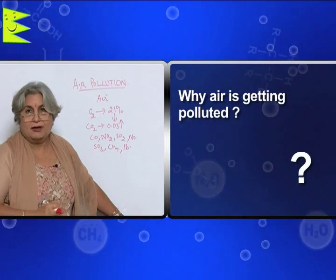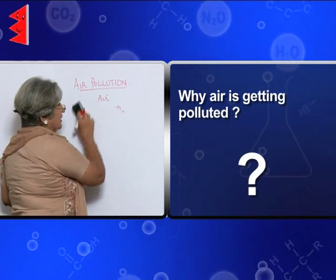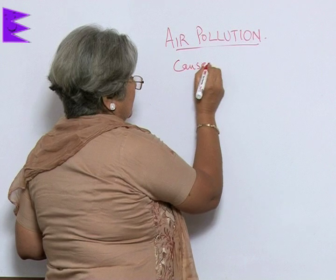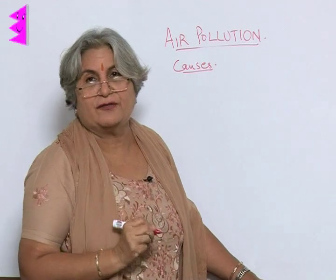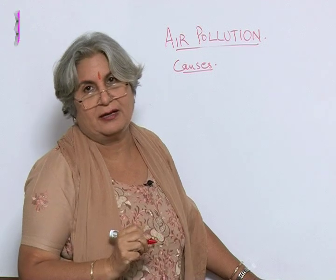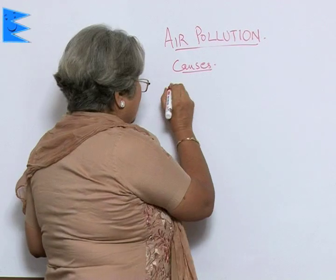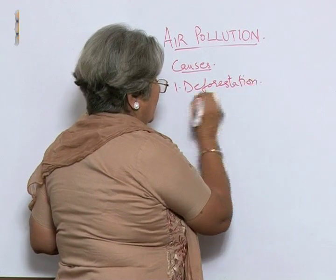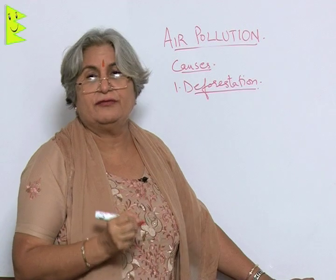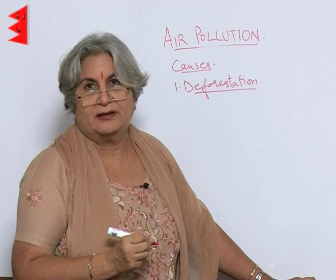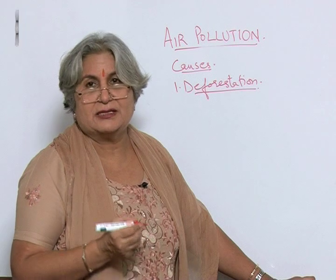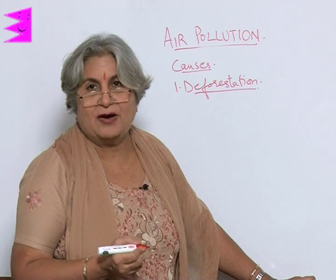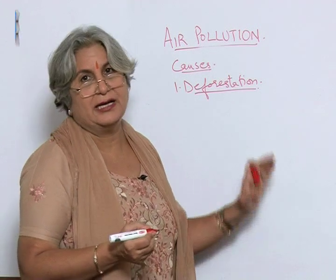Why is air getting polluted? Why was it not a matter of concern a few years back? The first reason is that the natural purifiers of air — the plants — are being cut. The most important reason is deforestation. In India itself, we have lost a lot of forest area. So obviously, the natural processes by which air was getting purified — carbon dioxide being used and oxygen being released — are getting depleted.